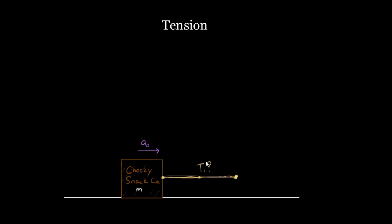So what tension is required to pull this box with an acceleration of a₀? To do these problems, we draw a force diagram the way we draw any force diagram. We draw the forces on the object: the force of gravity equals mg pulling down, a normal force from the floor since the box is in contact with it, and then the tension.